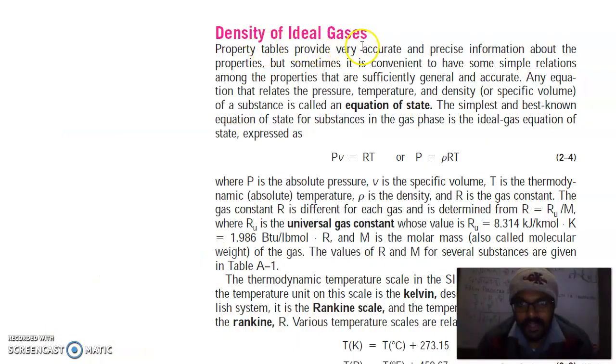Density of ideal gas. Property tables provide very accurate and precise information about the properties. But sometimes it is convenient to have some simple relations among the properties that are sufficiently general and accurate. Any equation that relates the pressure, temperature and density or specific volume of a substance is called an equation of state. The simplest best known equation is the ideal gas equation: PV equals RT.